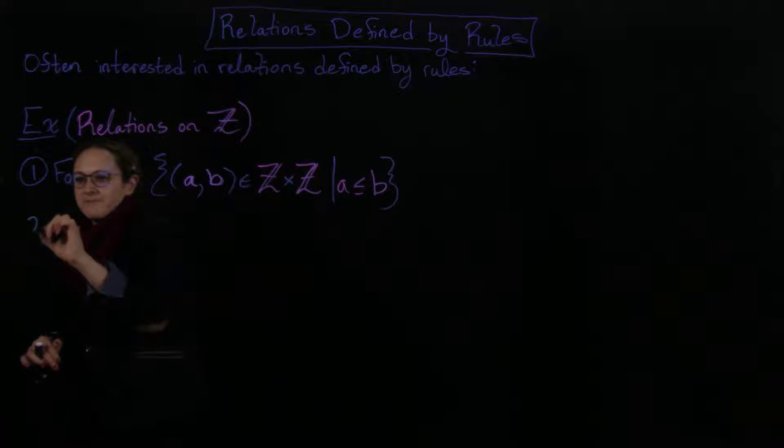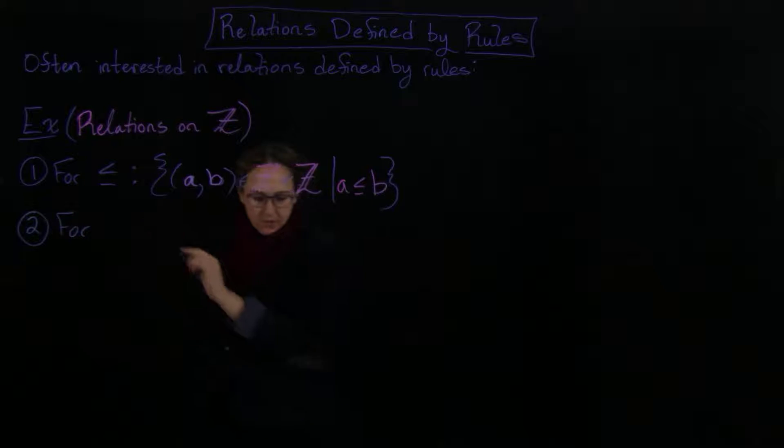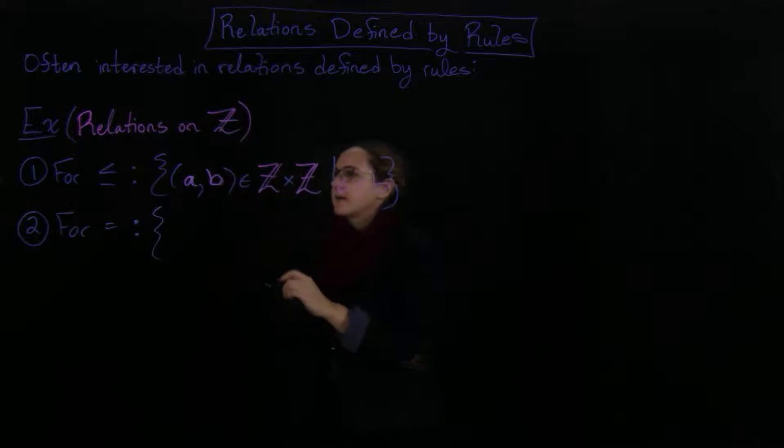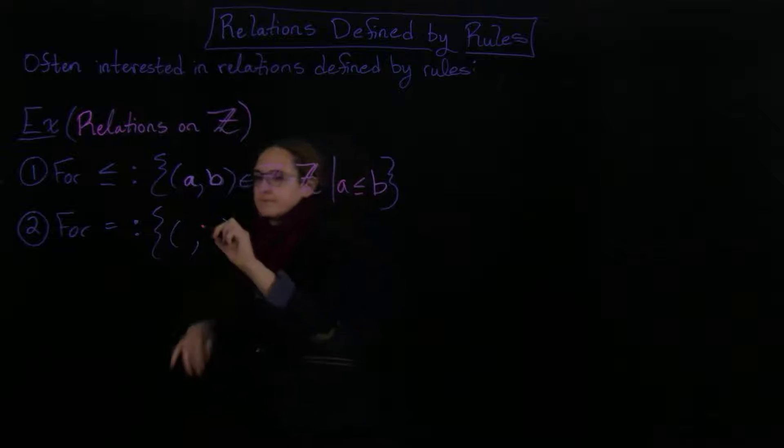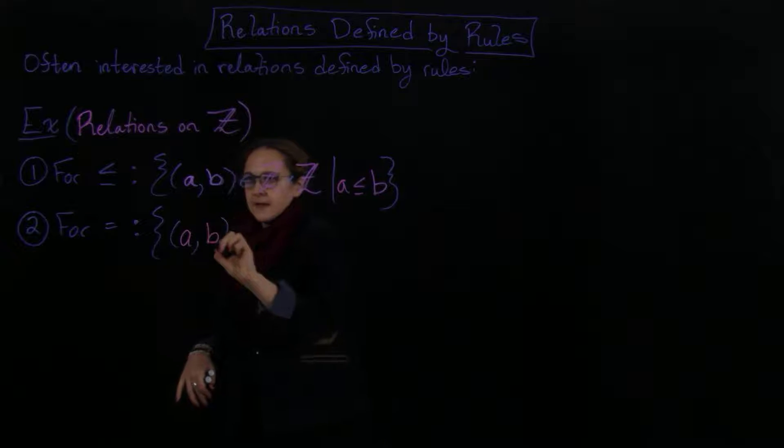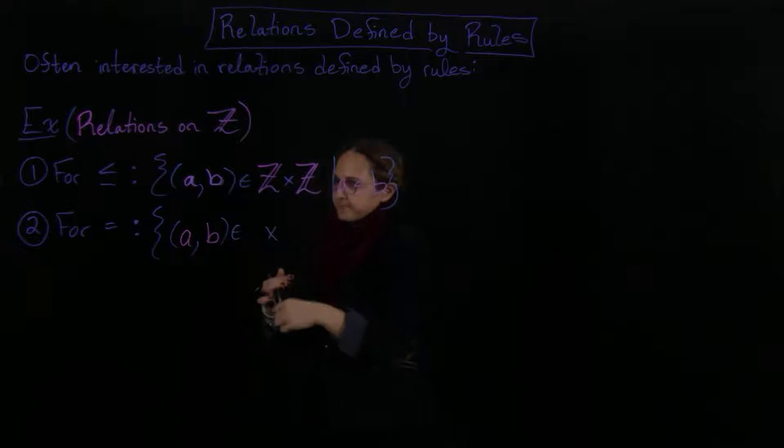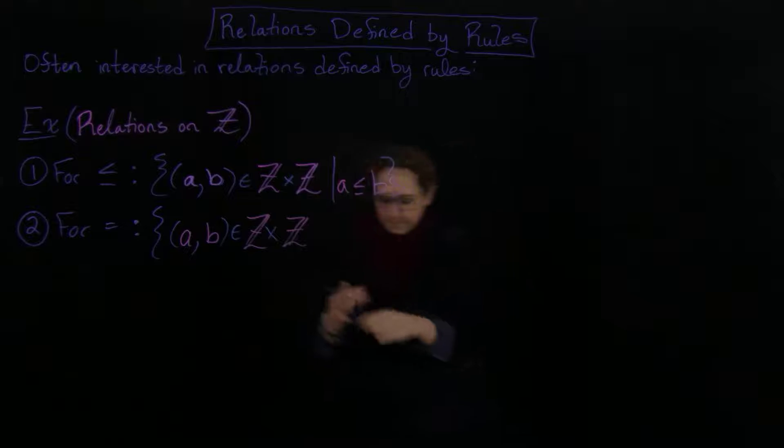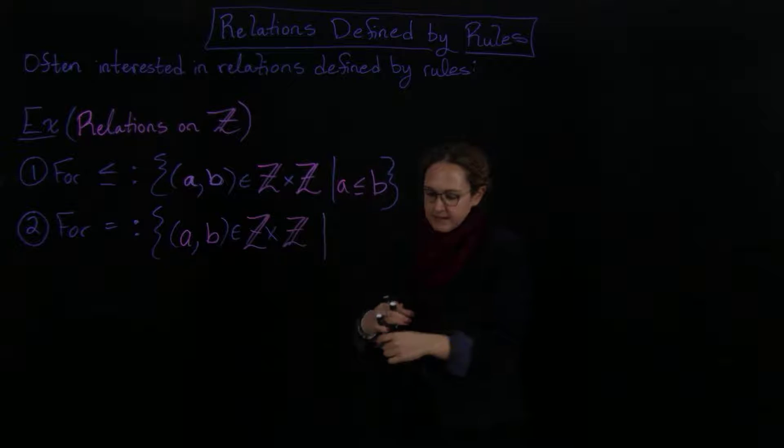Okay, so for the second one, for equals, we could write the set of all A, B in the integers cross the integers satisfying that. And now we want A equals B.